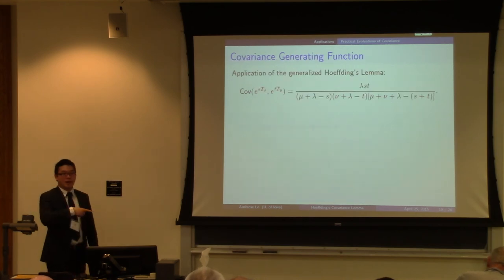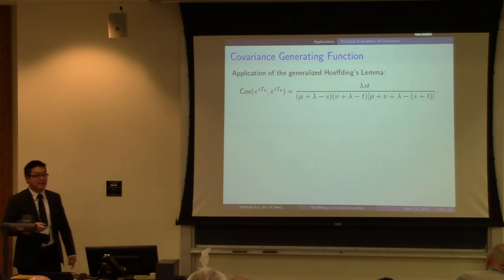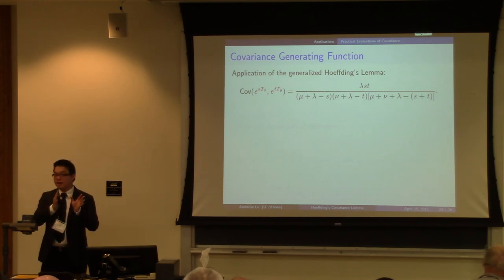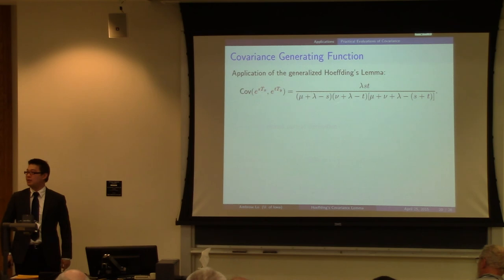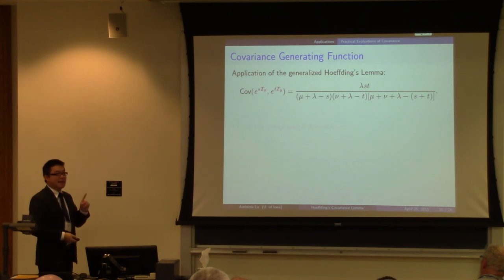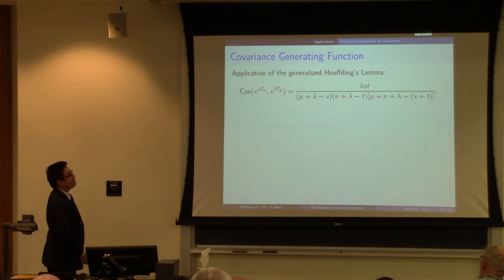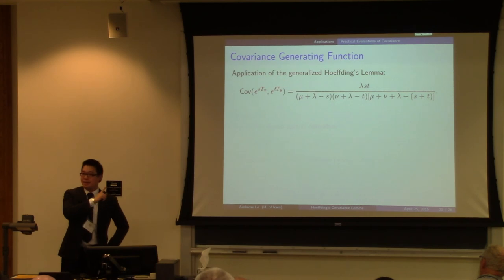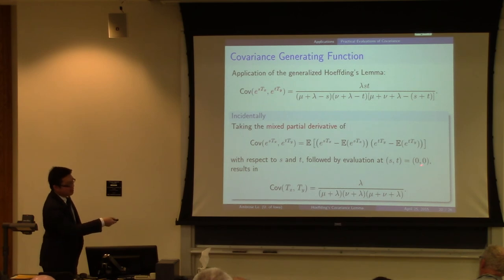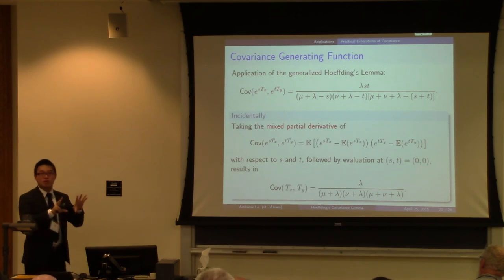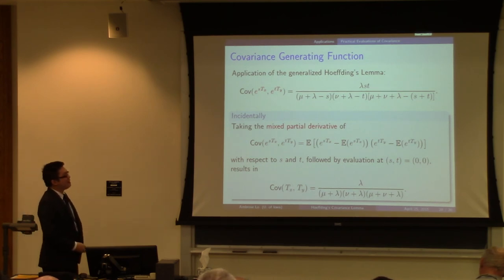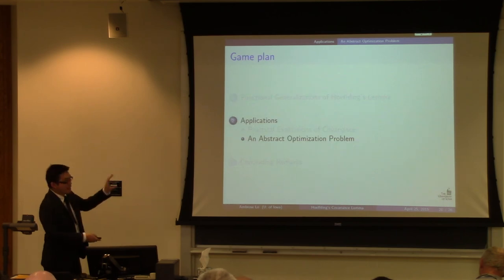Another application of the generalized Hoeffding's formula is to calculate what I call a covariance-generating function — analogous to a moment-generating function. This is the covariance between exponentials of future lifetime, e^(sX) and e^(tY). By taking partial derivatives with respect to s and t and then evaluating at zero, we can recover the original covariance between Tx and Ty.